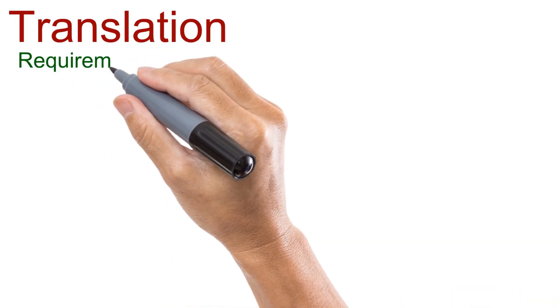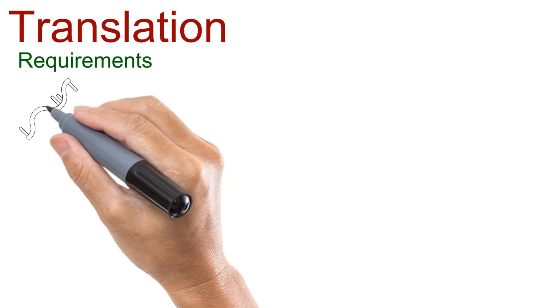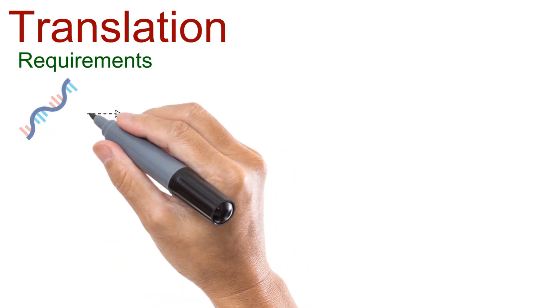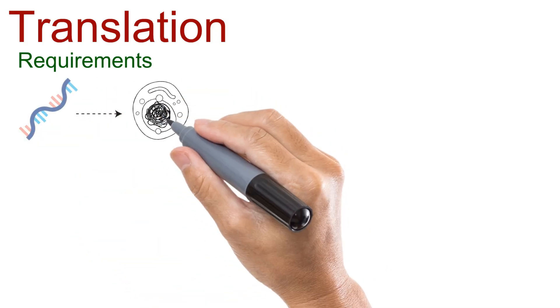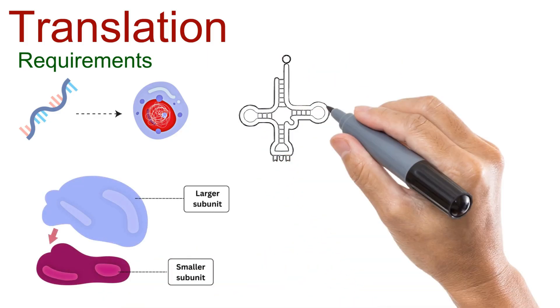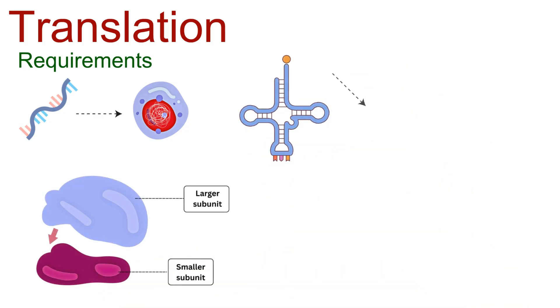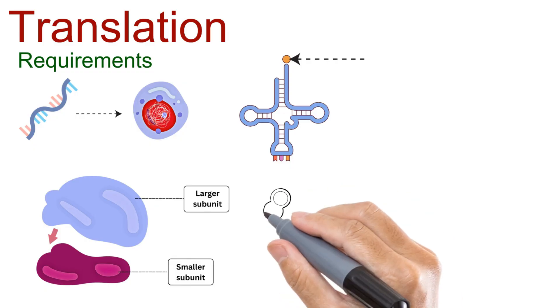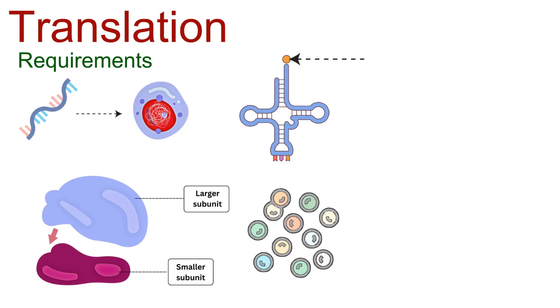For translation to happen, the cell requires mRNA, carrying the genetic message from the nucleus, ribosomal subunits, the protein-building machines, tRNA molecules, which bring in the right amino acids, and the amino acids themselves, the raw material of proteins.